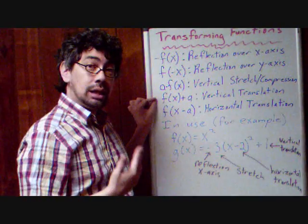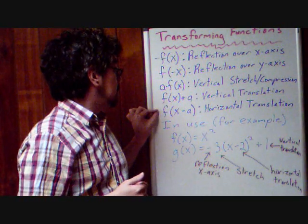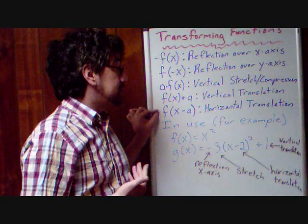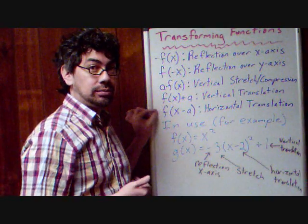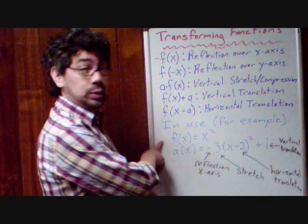When we add a number at the end of the function, it's a vertical translation. When we subtract a number inside the function, it's a horizontal translation. Now that's all confusing, but it makes a little bit more sense when we look at an actual example.